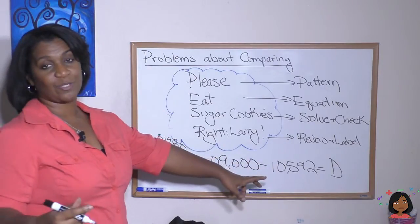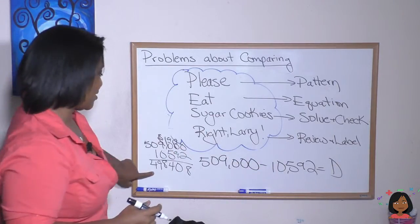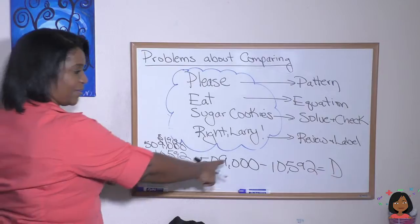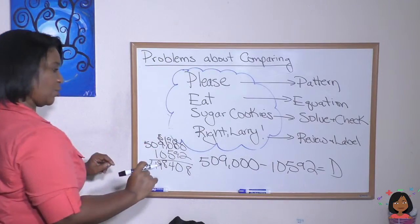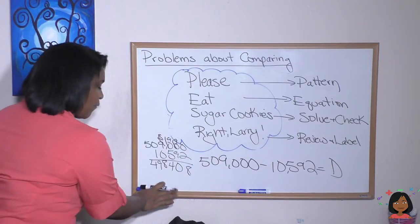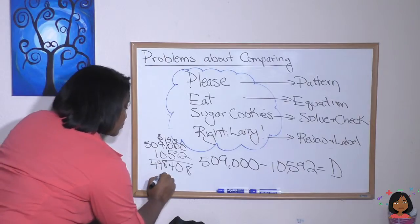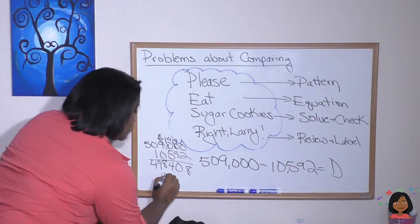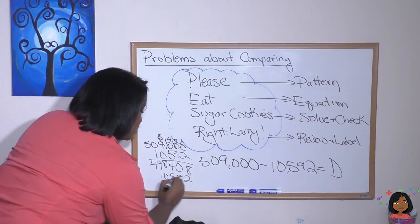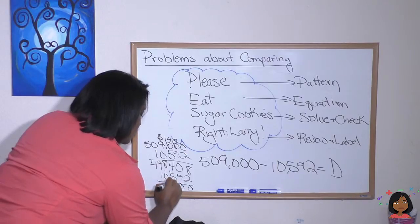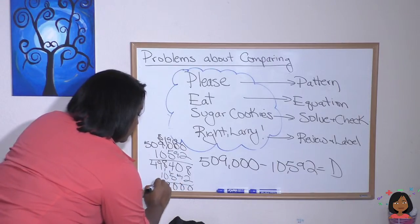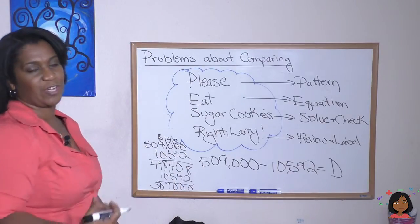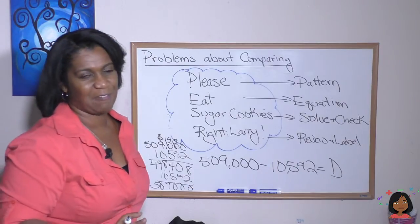Okay, now we're going to check this answer. And in subtraction the way you check is you add up. So I'm going to take this number and I'm going to add 10,592 to it. Okay, let's see if we get the 509 number. Make sure your numbers are lined up. 0, 5, 9, 2. 8 and 2 is 10. 0, 0, 9. And look, it adds right back up. So we are good. We didn't make any errors in our arithmetic.